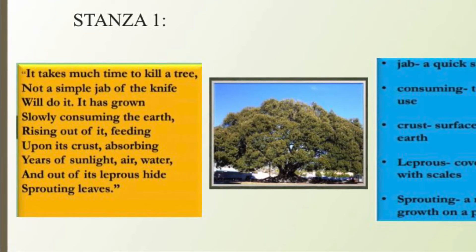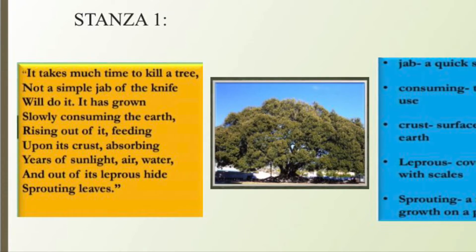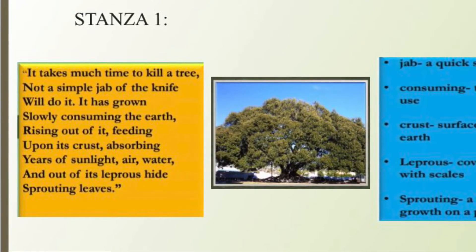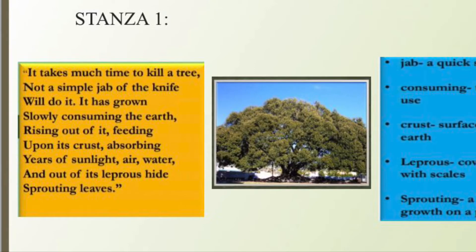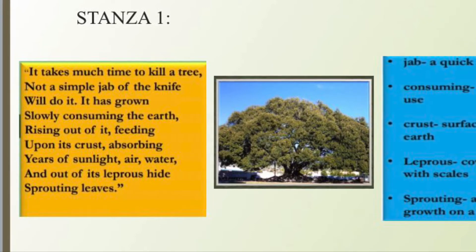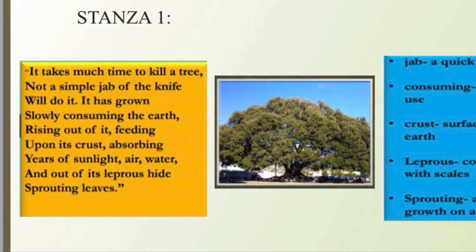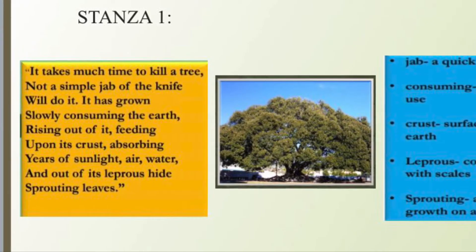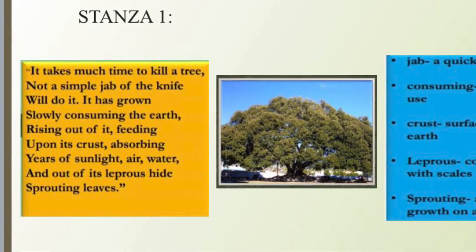In this stanza, jab means a quick stab; consuming means to use; crust means the surface of the earth; leprous hide means discolored bark or something covered with scales; and sprouting means a new growth of a plant or a leaf.